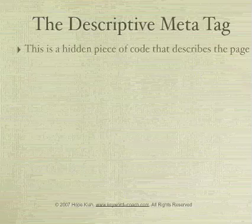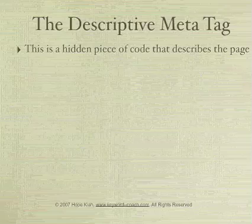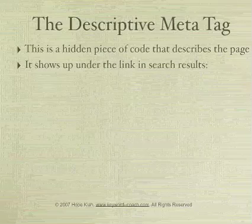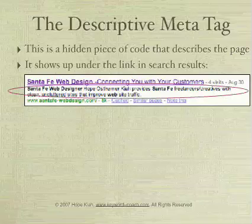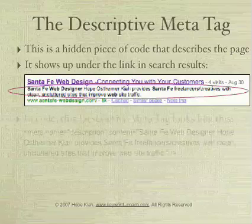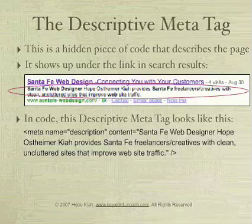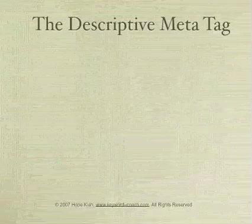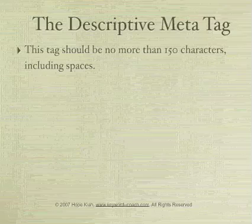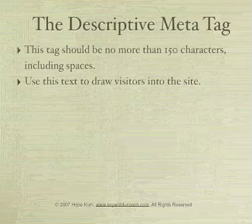The descriptive meta tag is a hidden piece of code that describes the page. It shows up under the link in search results — santafe-webdesigner, Hope Ostheimer Kaya, et cetera. That's my descriptive meta tag, and that's where yours will show up under your link. In code, the descriptive meta tag looks like this. The keyword in this tag is santafe-webdesigner. This tag should be no more than 150 characters, including spaces, and you want to use this text to draw visitors into the site.